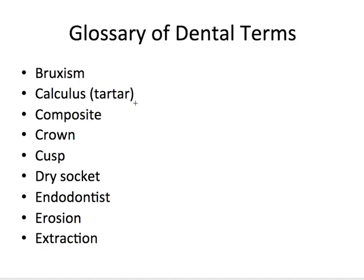Composite refers to a tooth-colored, resin-based filling material used to repair or cosmetically enhance teeth. A crown can refer to the top enamel-covered portion of a natural tooth, but also to a restoration that covers the entire natural crown when the tooth has broken down beyond repair by a smaller filling. A cusp is one of the pointed parts on top of a tooth. Dry socket is pain and inflammation in a tooth socket after extraction, when the blood clot is lost, leaving bone and nerve endings exposed — very painful.